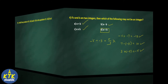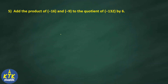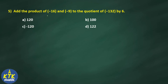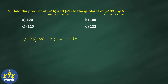Question number 5: add the product of minus 16 and minus 9 to the quotient of minus 132 divided by 6. This involves two operations. First: minus 16 multiplied by minus 9 — minus into minus is plus, and 16 nines are 144. So the first part gives 144.